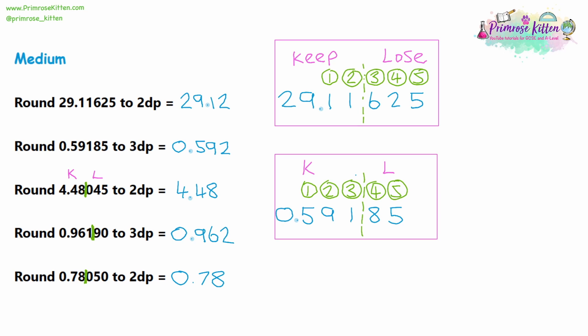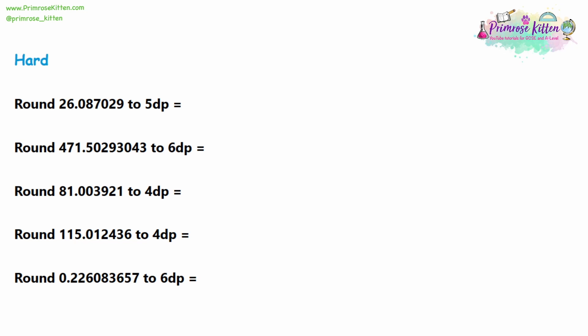Now we've done the detailed working out, you can see how to do these questions quickly by writing a little less. For the hard questions, the first question has five decimal places: 0, 8, 7, 0, and 2. Draw a line after that fifth decimal place, keep the numbers to the left, lose the numbers to the right — we're losing the nine. The first number we're losing is a nine, five or higher, so we are rounding up. Write out the digits — 26.0870 — and when writing the final digit, increase it by one: rather than writing a two, write a three.